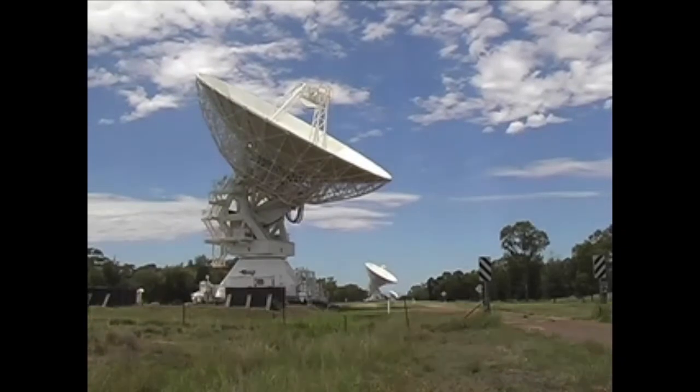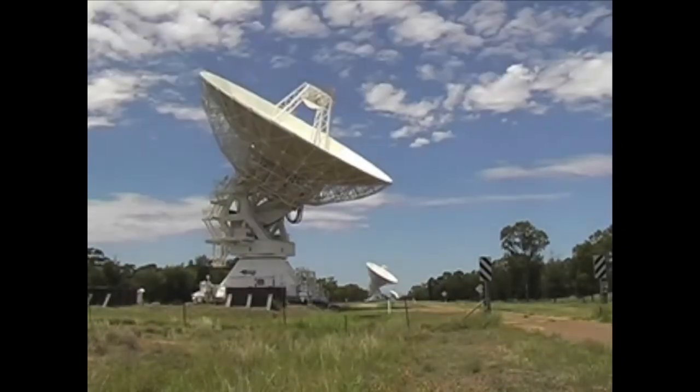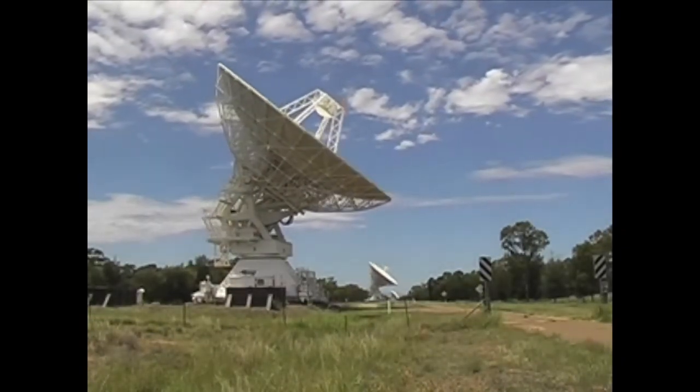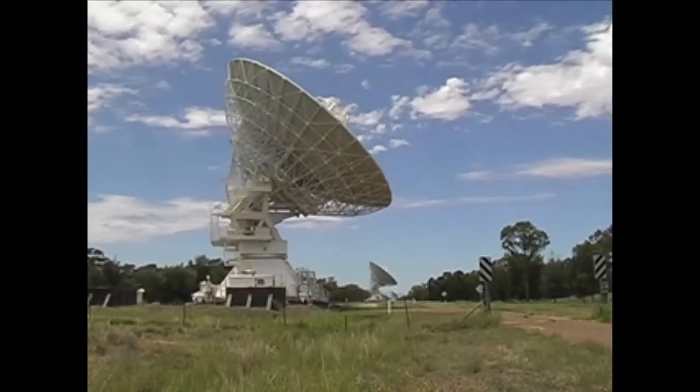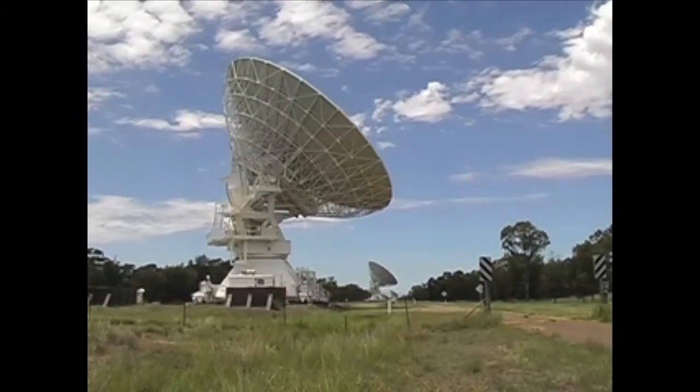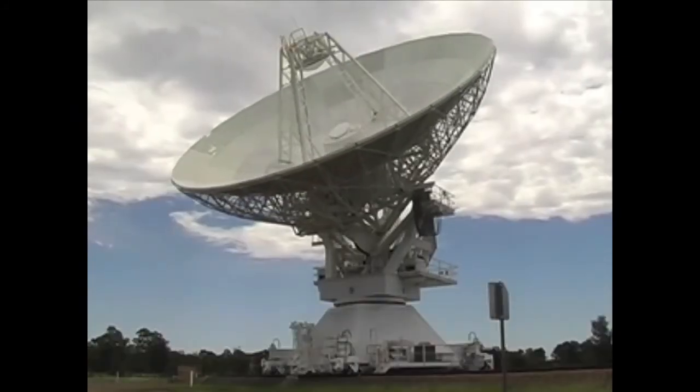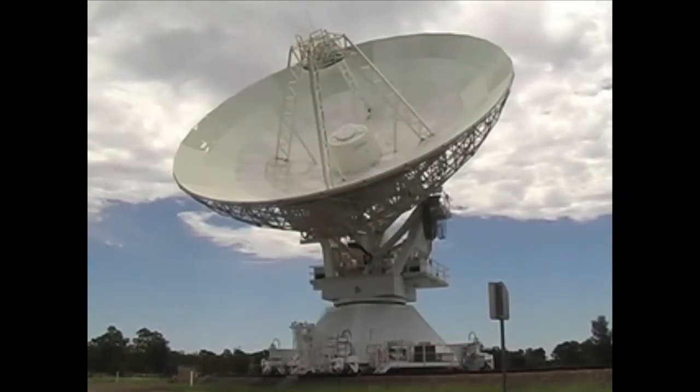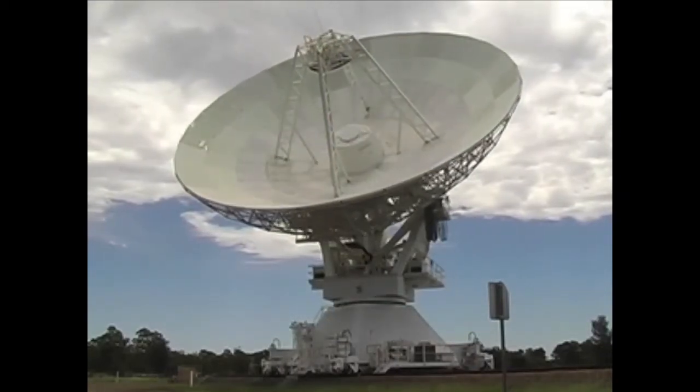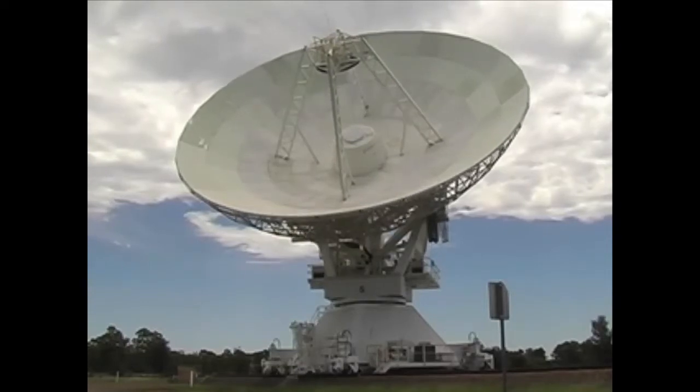Here is some footage of the Australia Telescope Compact Array, the radio telescope near Narrabri in New South Wales that I took last time I was observing there. Radio telescopes like these can pick up emission from hydrogen gas in the outskirts of galaxies and measure its velocity using the Doppler shift in the so-called 21cm line of hydrogen.